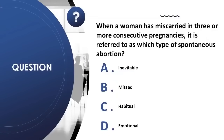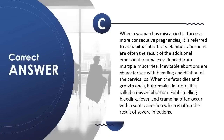Question 11: When a woman has miscarried in three or more consecutive pregnancies, it is referred to as which type of spontaneous abortion? A) inevitable, B) missed, C) habitual, D) emotional. Correct answer is C — habitual abortions. Inevitable abortions are characterized with bleeding and dilation of the cervical os. When the fetus dies and remains in utero, it is called a missed abortion. Foul-smelling bleeding, fever, and cramping occur with a septic abortion, often resulting from severe infections.